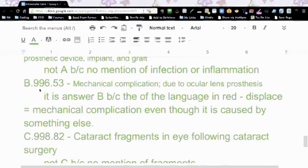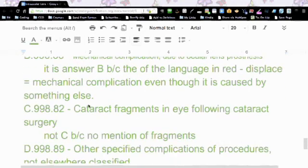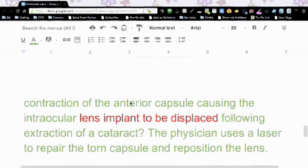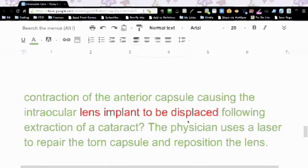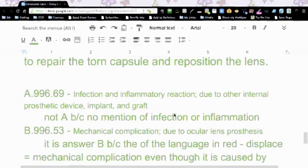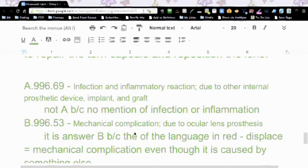So really, the battle was between B, mechanical complication and D, other specified complications. So when we read it again, it's talking about contraction of the anterior capsule causing the intraocular lens implant to be displaced. So the implant is malfunctioning, it's being displaced. And that's why B would be the correct answer, mechanical complication.